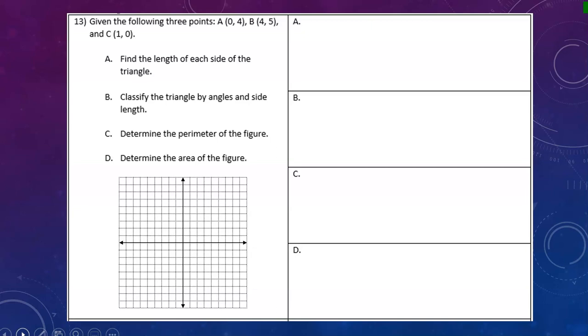We're given three points A, B, and C, and we have a list of four things to do. Part A asks us to find the length of each side of the triangle.